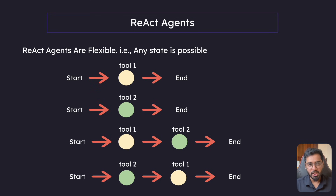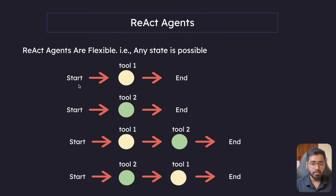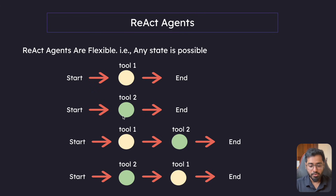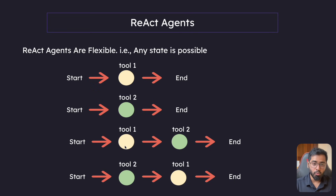Let's look at an advantage of React agents. React agents are very flexible - any state is possible. What we mean by that is we start the execution and if we have the first tool, it executes the first tool and comes to an end. If there is a tool two, it executes tool two to figure out the problem. And there are also situations where tool one could be executed first and then tool two, or it could also be the opposite.